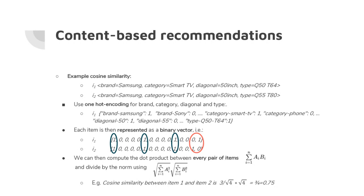We can compute this for every pair of items — comparing a Samsung 15-inch TV with dishwashers or other smart TVs. If they share no feature value, similarity is 0; if all values match, similarity is 1.